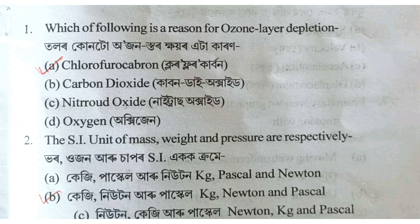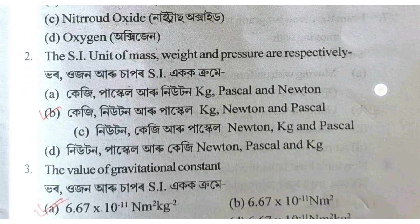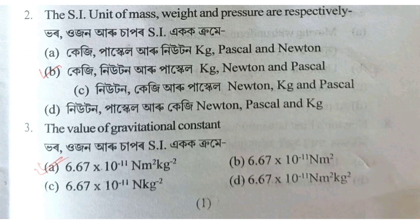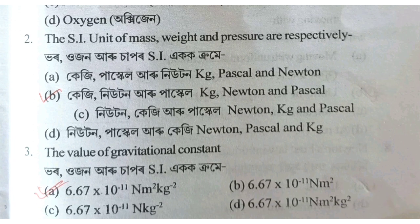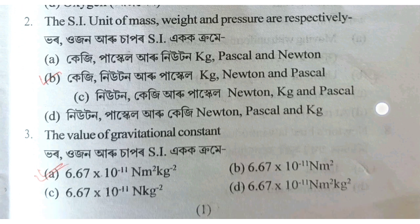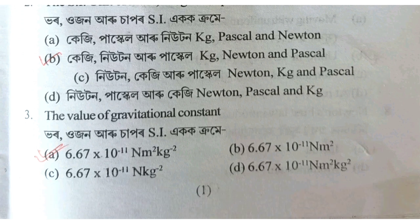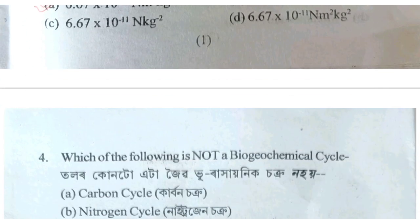The next question is about the value of the gravitational constant. The value of the gravitational constant is 6.67 into 10 to the minus 11 Newton meter square per kg square.